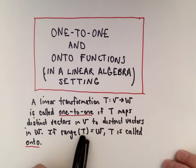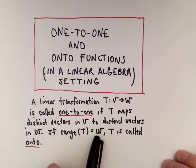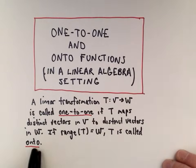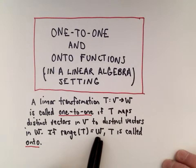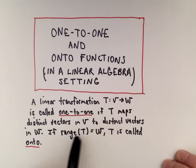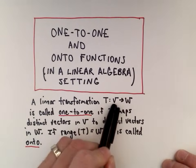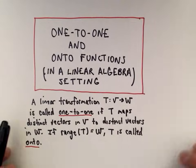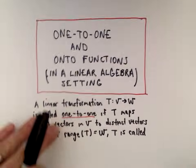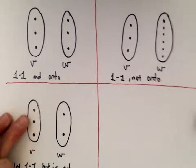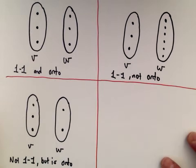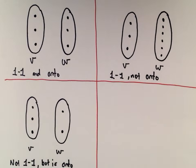If the range of that transformation equals all of W, T is called onto. The idea is: if you take any vector in the vector space W, there's some vector in V that's going to get mapped to it. You see this in the following diagrams, and we'll talk about a couple of basic examples to make this more familiar.